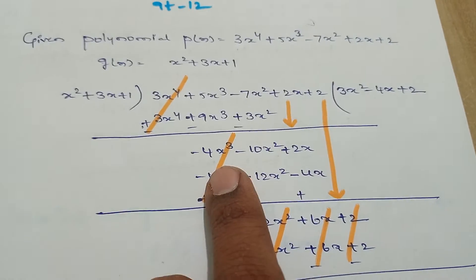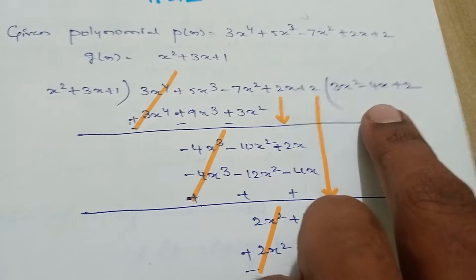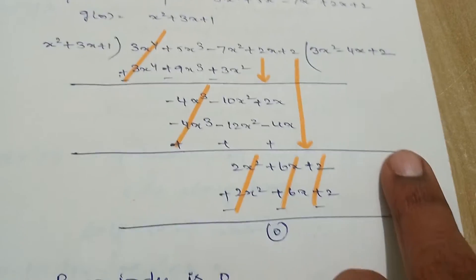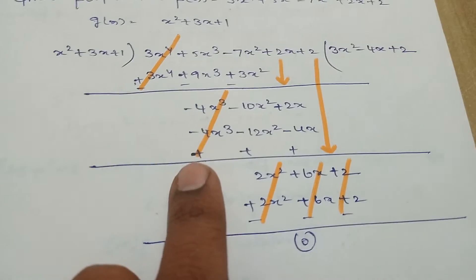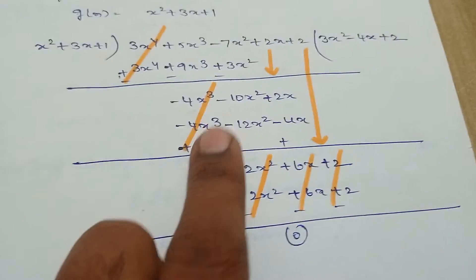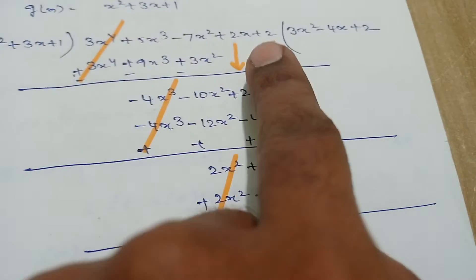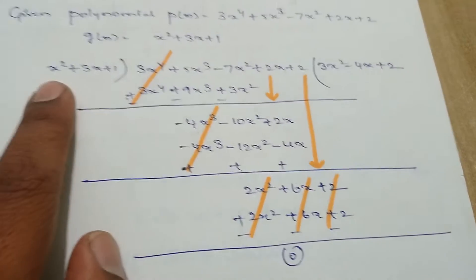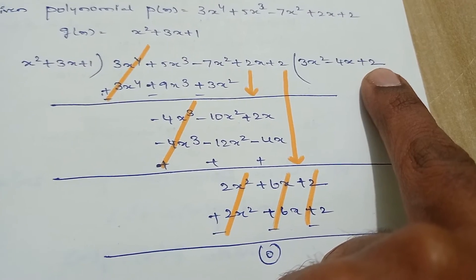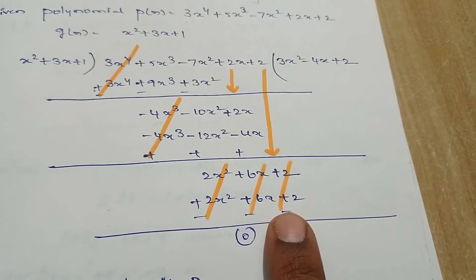For x², what we multiply to become -4x³? We multiply by -4x. 3x into -4x = -12x², and 1 into -4x = -4x. By doing subtraction the signs become different. -10x² + 12x² = 2x², and 2x + 4x = 6x. Take the last term, 2. For x², what we multiply to become 2x²? We multiply by 2. 2 × x² = 2x², 3 × 2 = 6x, and 1 × 2 = 2.